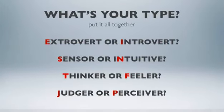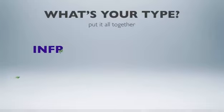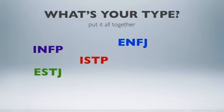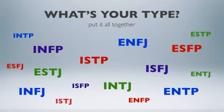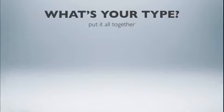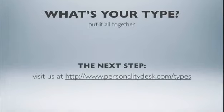Now it's time to put it all together. The four letters you have chosen are combined to create a code for your personality type. It might be INFP, ESTJ, ISTP, ENFJ, or any one of 16 combinations. For each personality type, your preferences combine in a unique way to create an overall style of interacting with the world. Now that you've discovered your preferences, you'll want to see how they work together. The next step is to read a personality type profile based on your four-letter code. This will help you to understand how the preferences work together, as well as to help you verify that you selected the preferences that best suit you.